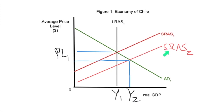Whenever the short-run aggregate supply curve shifts outward, that is actually a good sign, because we've increased output and yet we've reduced the average price level. That would happen as a result of a reduction in any of the factors that contribute to the short-run aggregate supply curve — for example, any reduction in cost, maybe a massive drop in oil prices. So there is the second way to show economic growth on a neoclassical aggregate supply, aggregate demand diagram: an outward shift of the short-run aggregate supply curve.